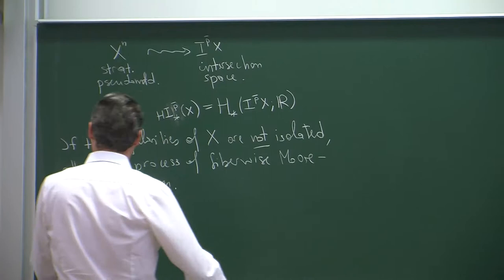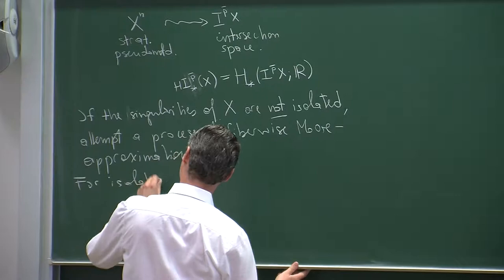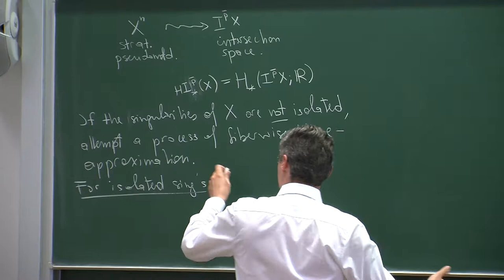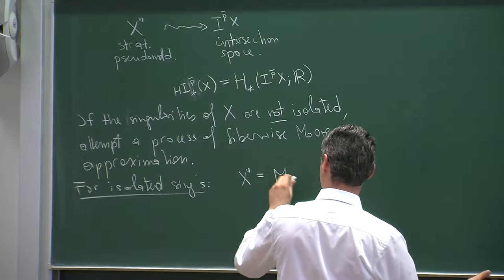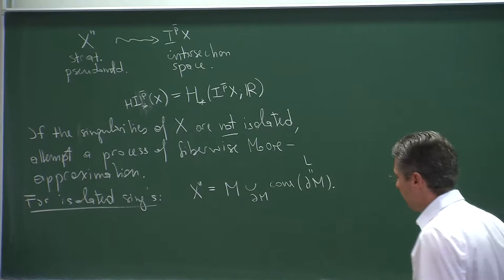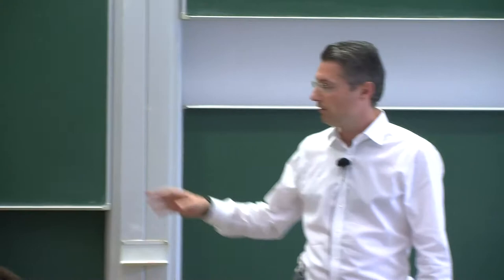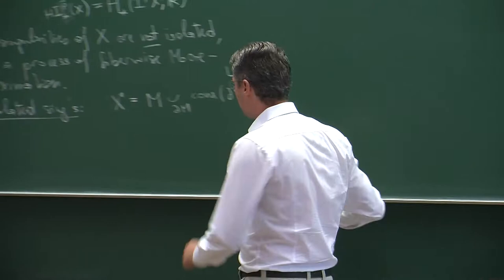Let's return to the case of isolated singularities — let's assume there's just one, the most basic case. There is a compact oriented manifold M, and along the boundary we attach the cone. The boundary is then also the link of the singularity. For such a manifold, we have considered what the intersection homology looks like. It is worthwhile comparing that computation with what one would get for the HI homology.